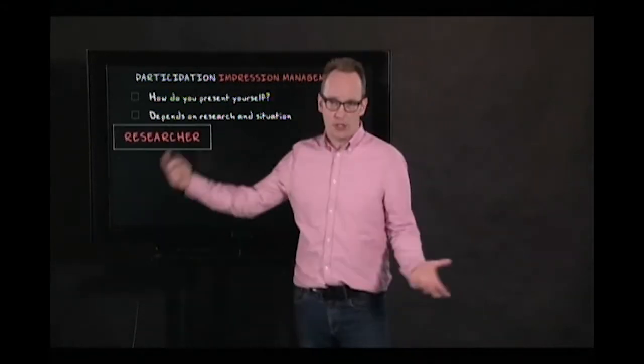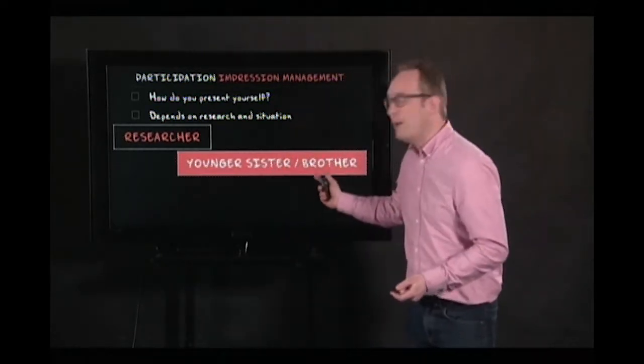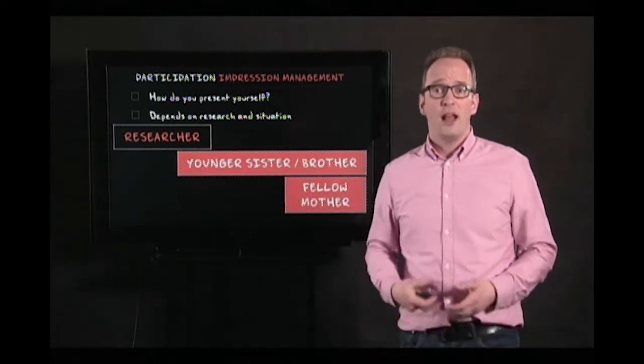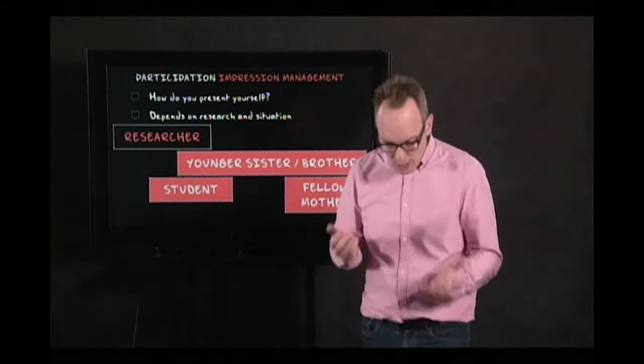Sometimes you can present yourself as a researcher — but only when people understand what a researcher does. In participant observation, many people pose themselves as a younger sister or brother, or as a fellow mother. A very good role is that of a student, because a student poses questions all the time — and a younger sibling does too. So it's really easy to take on this role as a participant observer.